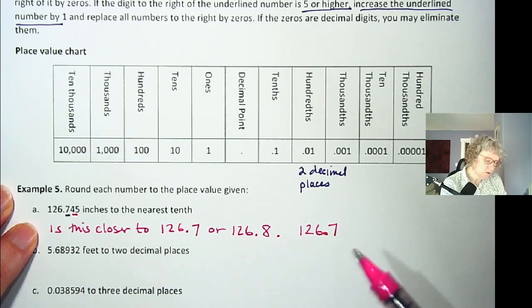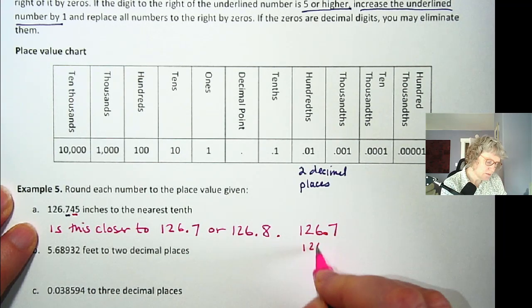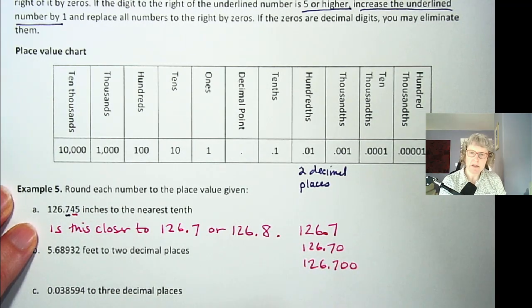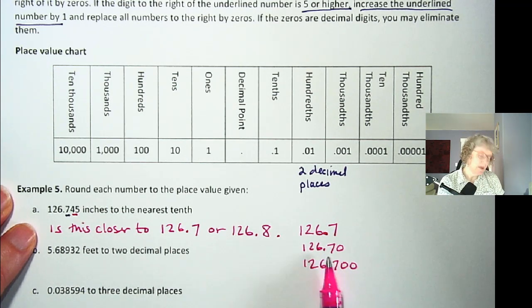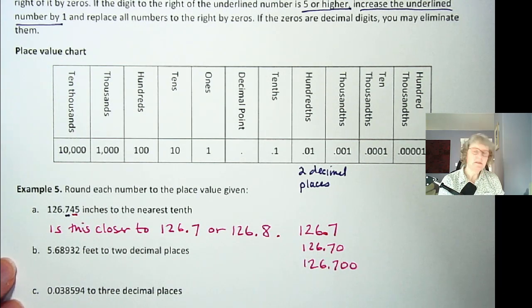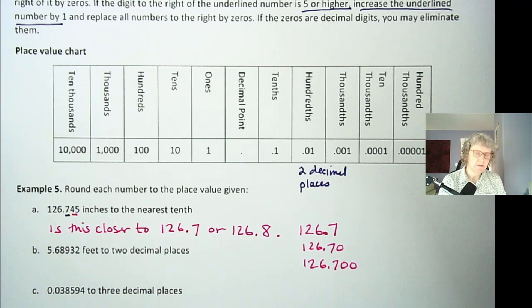If I wrote 126.70 or 126.700, those are mathematically all the same. Now sometimes you will write the zero to indicate I rounded to that place value, but mathematically they're equivalent. This is different than significant digits. If you've used science, you've used significant figures, those are different rules. We're not talking about that.